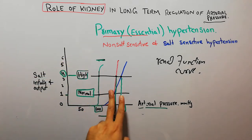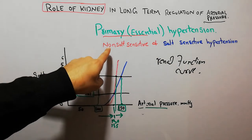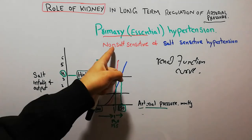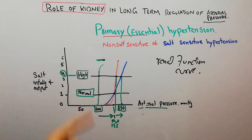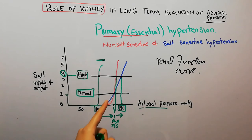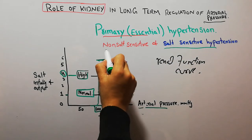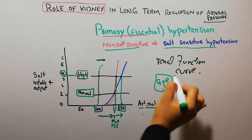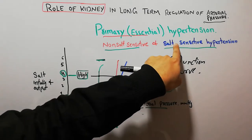These two types represent different patients, both with primary essential hypertension. One has salt-sensitive hypertension that increases significantly with increased salt intake. The other has non-salt-sensitive hypertension, which does not increase as much with higher salt intake. However, this salt sensitivity is not fixed — with increasing age, people with non-salt-sensitive hypertension may develop salt-sensitive hypertension.